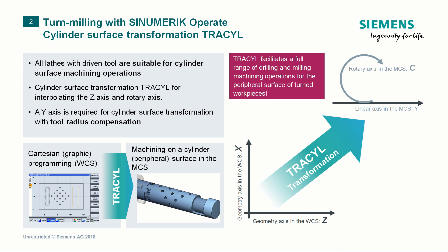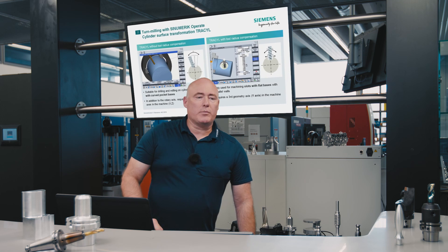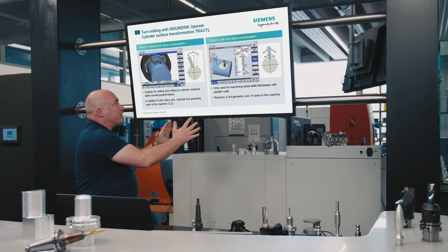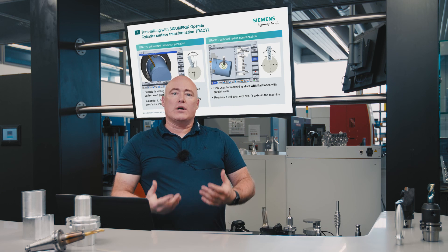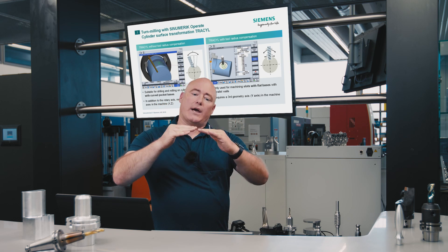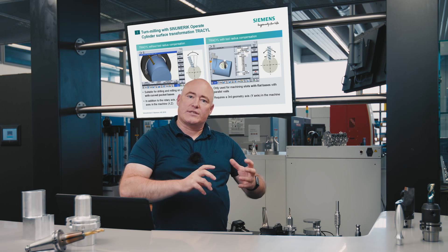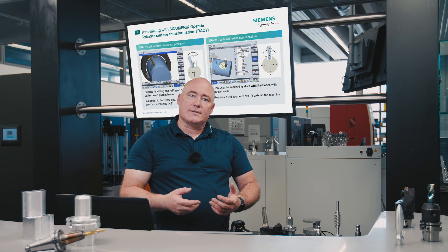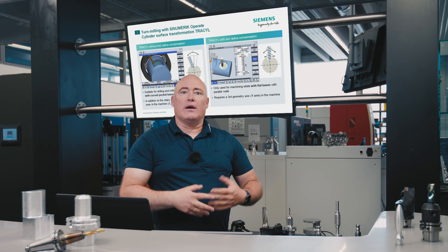In exactly the same way as with the front face machining, all turning machines with driven tools are suitable for TRASIL — in other words, cylinder surface machining. If machine tool radius compensation is necessary for this cylinder surface transformation, a Y axis is essential. Here once again in comparison: on the left, we see machining with TRASIL without machine tool radius compensation. And on the right, we see TRASIL with machine tool radius compensation. Machining without machine tool radius compensation is performed using the C axis, which inevitably creates inclined walls and a domed base — resulting from the interpolation of the C axis. During TRASIL machining with machine tool radius compensation, our Y axis is used, giving us straight walls and a flat base, and also enabling machining with machine tool radius compensation.